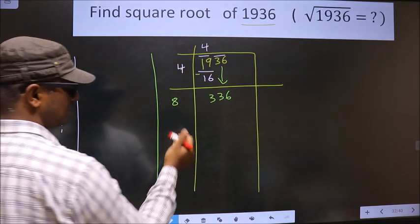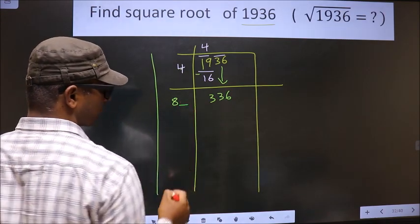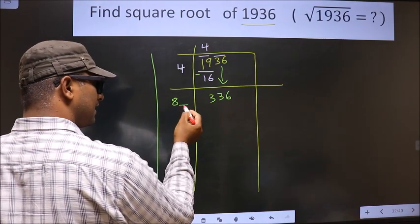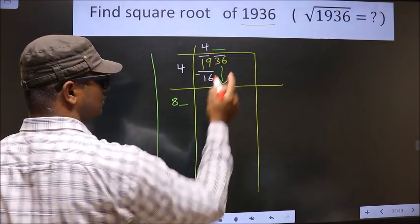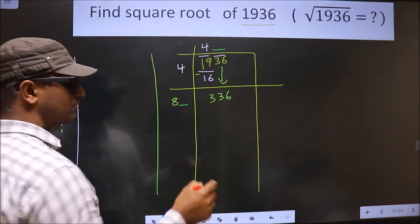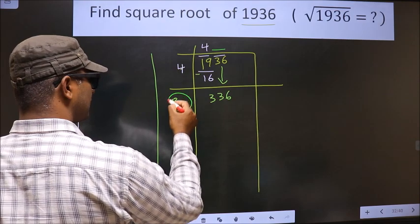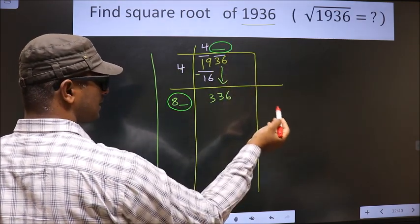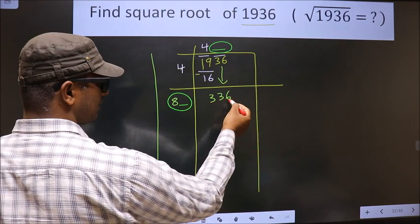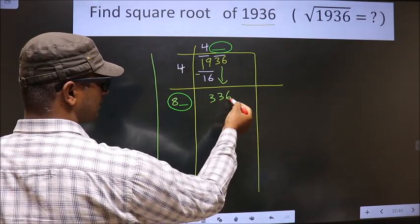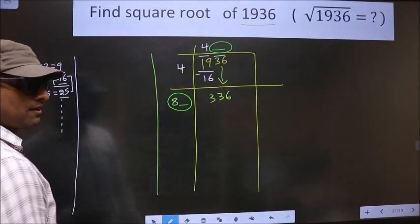Now we should write a number here. The condition is, whatever number you write here, here also you should write the same number. And also, when you multiply this number and this number, the resulting number should be equal or smaller than this, but not larger than this number. So let us find this number.